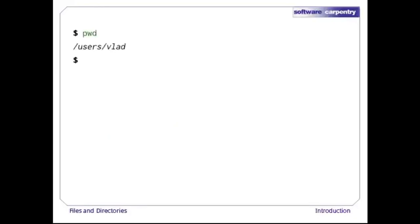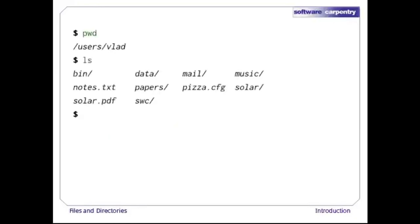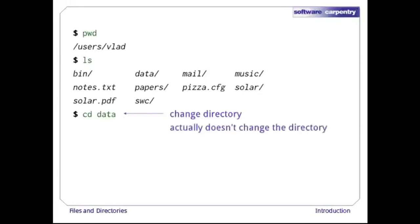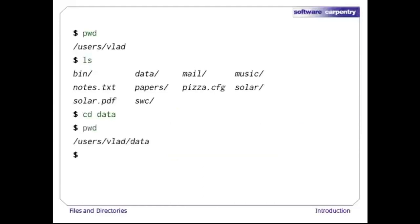What if we want to change our current working directory? pwd shows us that we're still in /users/vlad, and ls without any arguments shows us its contents. We can use 'cd' followed by a directory name to change our working directory. cd stands for change directory, which is a bit misleading — the command doesn't change the directory, it changes the shell's idea of what directory we are in. If we run pwd after it, we can see that we are now in /users/vlad/data.